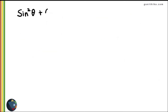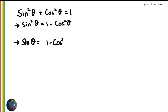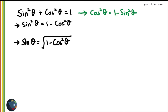From the identity sin²θ + cos²θ = 1, we can derive sin²θ = 1 - cos²θ, so sin θ = √(1 - cos²θ). This tells you how to find sin theta if you know cos theta. Similarly, cos²θ = 1 - sin²θ, so cos θ = √(1 - sin²θ), allowing you to find cos theta if you know sin theta.